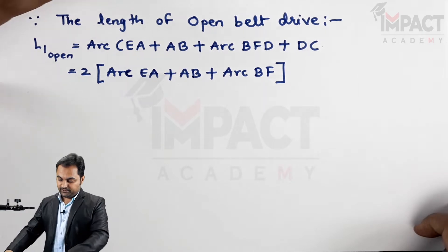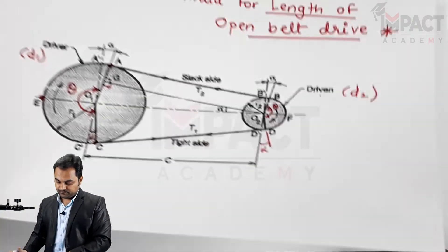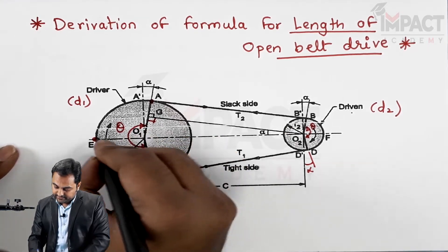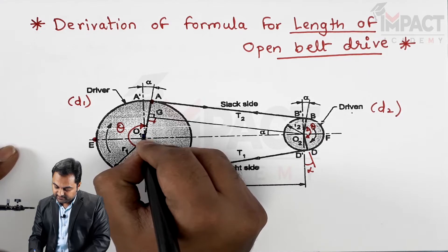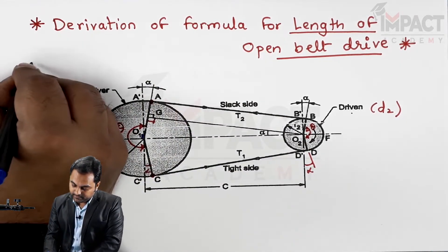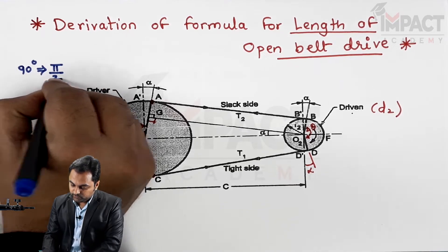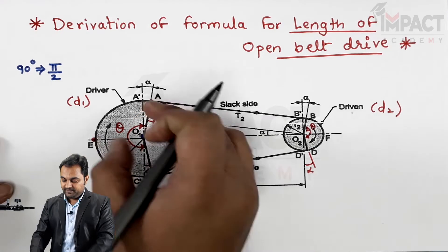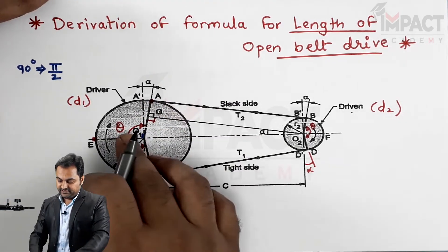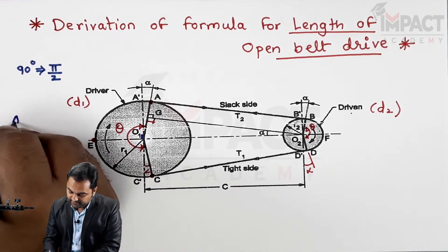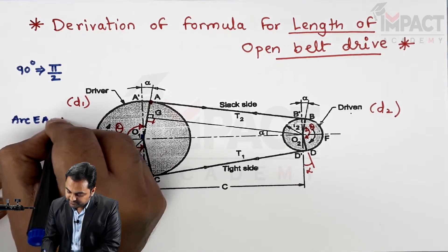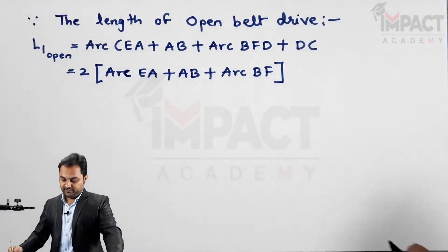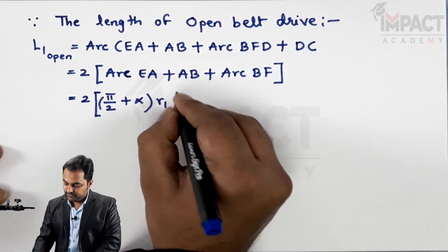Arc EA — the length of arc EA uses the angle E-O1-A, which is 90 degrees plus alpha. Writing 90 degrees in radians gives pi by 2. So the angle of lap for half of this pulley is pi/2 plus alpha, and the arc length is that angle multiplied by radius R1. So arc EA equals (pi/2 + alpha) × R1.